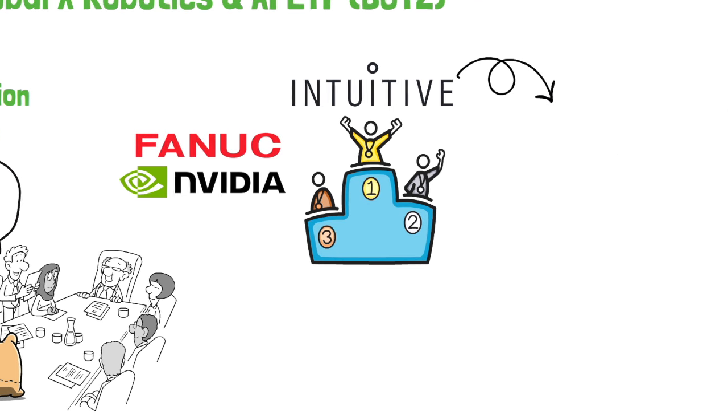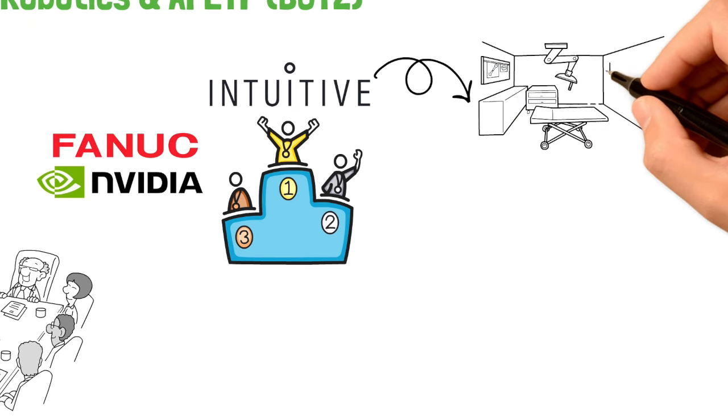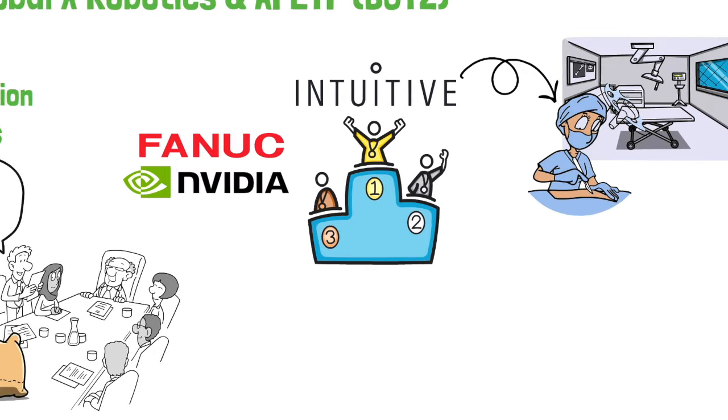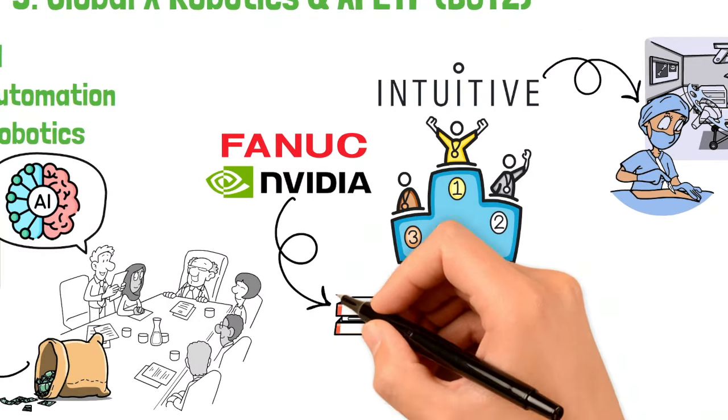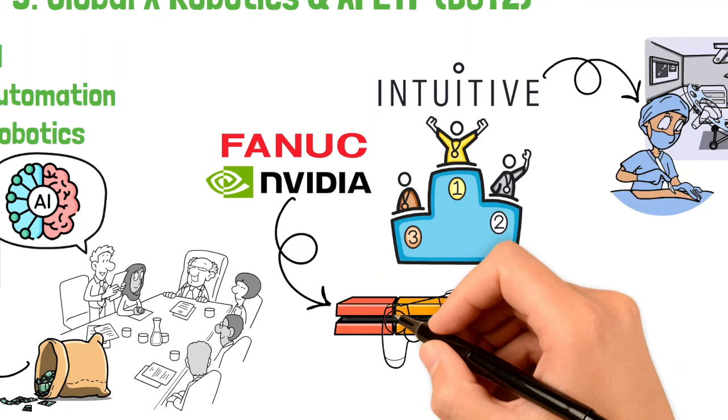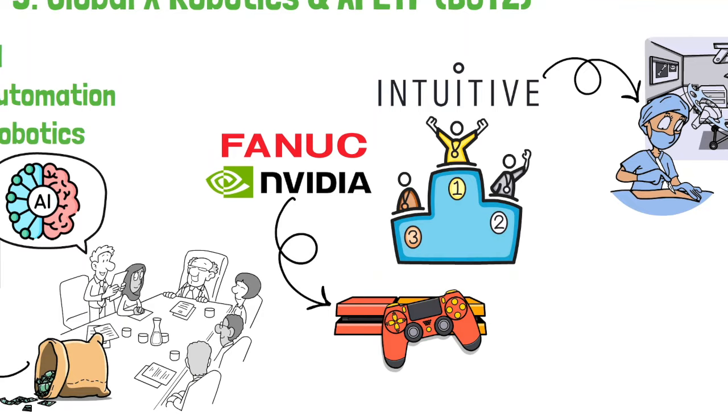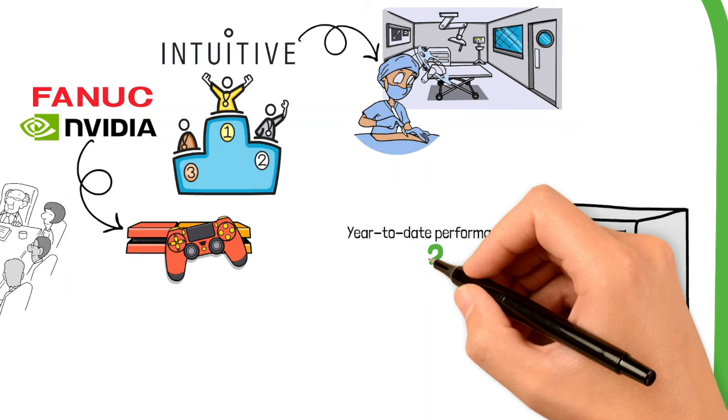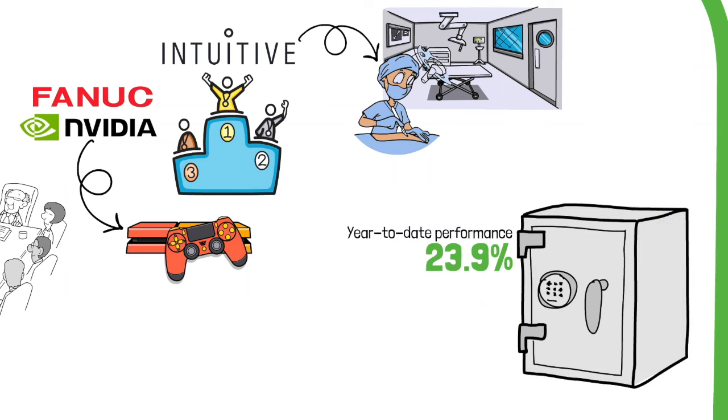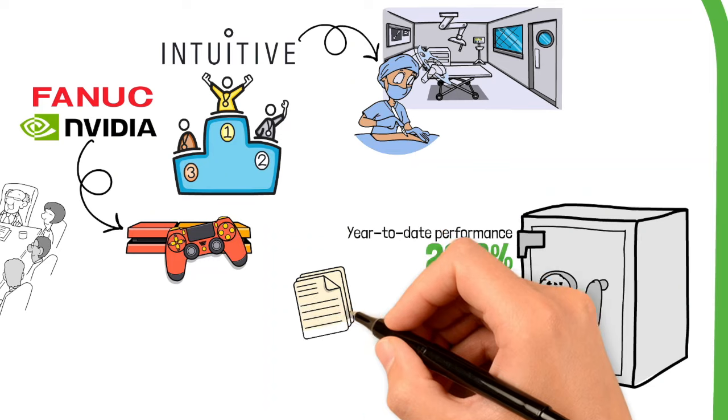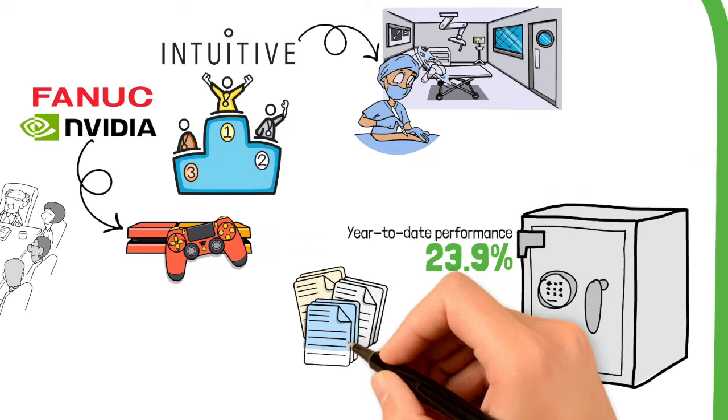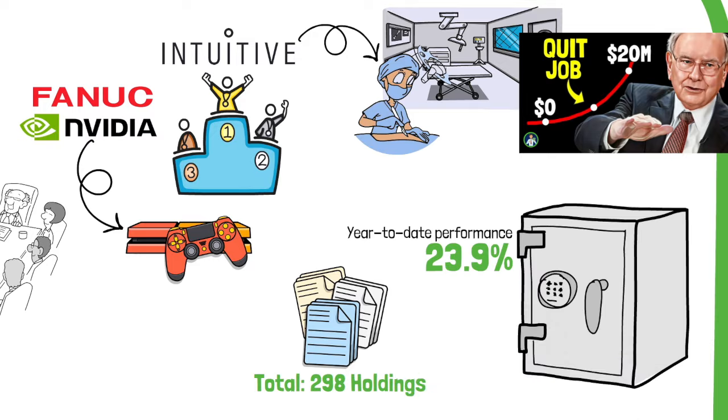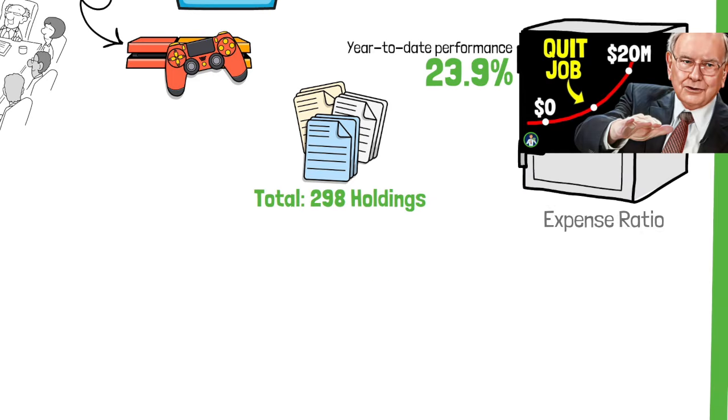Intuitive Surgical's innovative DaVinci system exemplifies the kind of advanced technology driving the growth of medical robots. NVIDIA's AI technology is pivotal across various industries, from gaming to data centers. BOTZ has a year-to-date performance of 23.9%, highlighting its strong growth trajectory. With 298 holdings, it is the most diverse ETF in our selection, spreading risk across nearly 300 companies involved in robotics and AI.